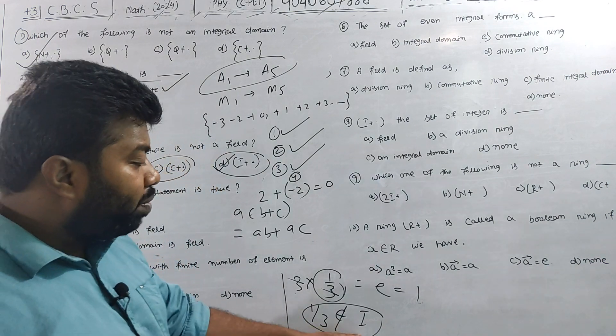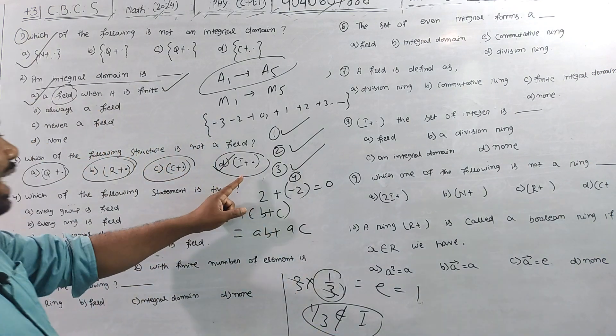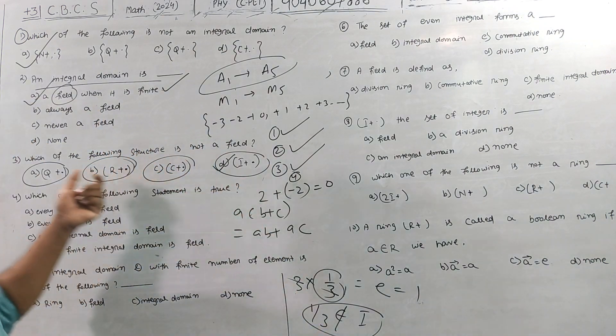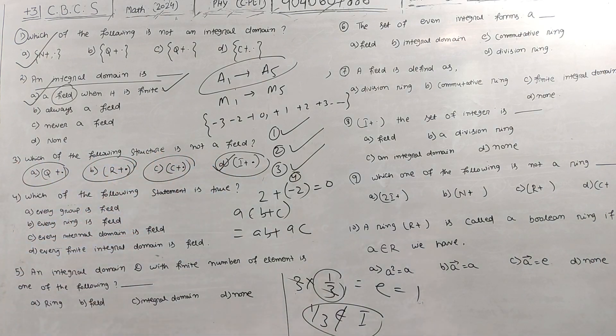Since 1/3 does not belong to I, the integers form an integral domain but not a field. Which of the following structures is not a field? The answer is D — the set of integers is not a field.